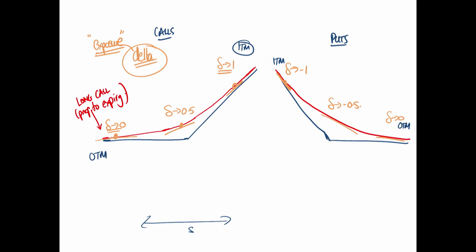We say 'should' because we're assuming everything stays constant, including the sensitivity of the option to movement in the underlying. Delta is based on a straight-line tangent to the curved red price track. Delta itself is not stable — it will change as we move up and down.